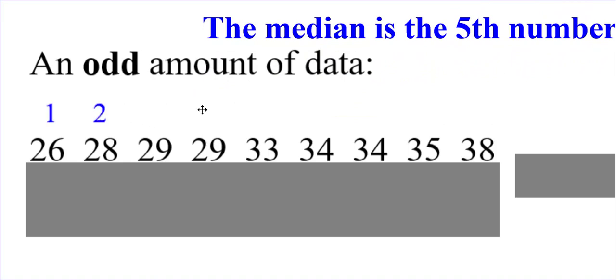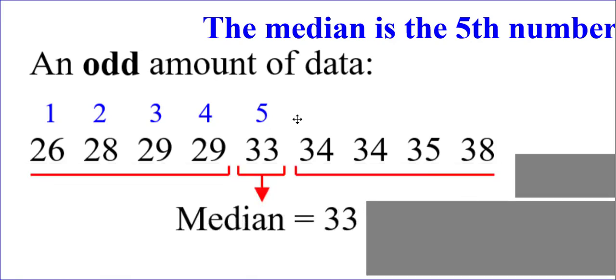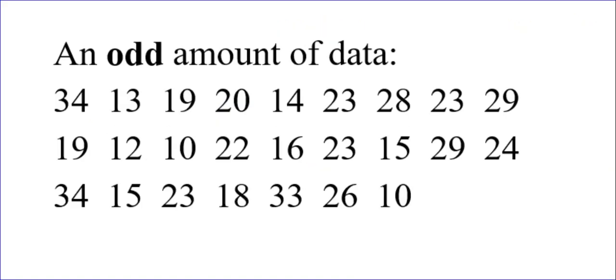Let me show you what I mean. If I count one, two, three, four, five, right there, the 33, which was my fifth number, that number is right smack dab in the middle. Now, it's not hard to see that when there's only nine numbers, but what if you had 25 numbers, like what you have here? Then it's going to be trickier to find out what number is in the middle, and so that's why we're doing this dividing by two trick.